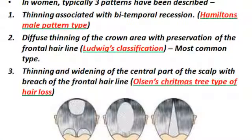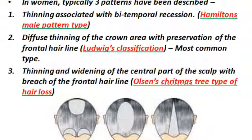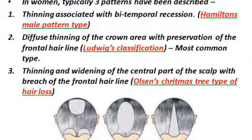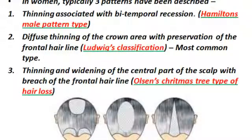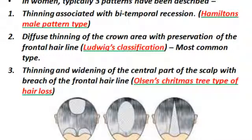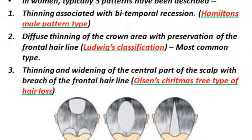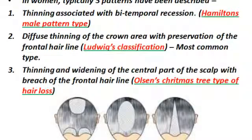In females, the three patterns of pattern hair loss are: number one, the Hamilton male pattern type, which resembles male pattern alopecia with thinning associated with bi-temporal recession; number two, the Ludwig's pattern, which shows diffuse thinning of the crown area with preservation of the frontal hairline; and number three, Olsen's Christmas tree pattern, which shows thinning and widening of the central part of the scalp with breach of the frontal hairline.